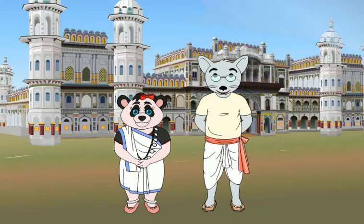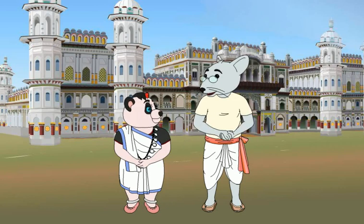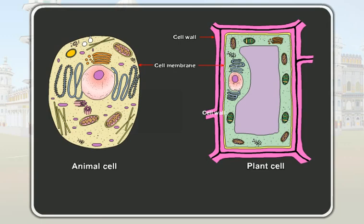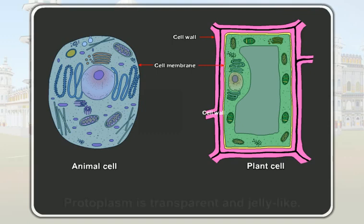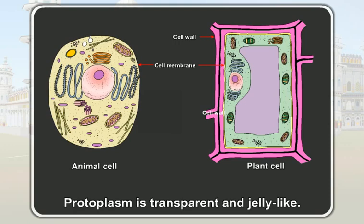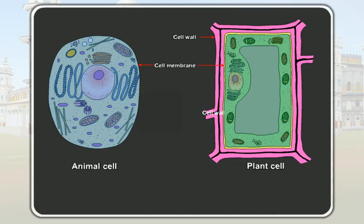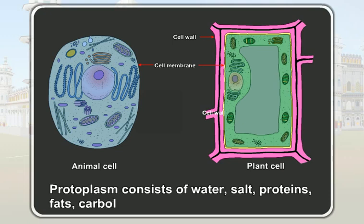Students, let us discuss now about another cell organelle which is common to both the plant cell and the animal cell. Inner to the cell membrane in both the plant and the animal cell there lies the protoplasm. The protoplasm is transparent and jelly-like. It is the living substance of the cell. Protoplasm consists of water, salt, proteins, fats, carbohydrates, etc.